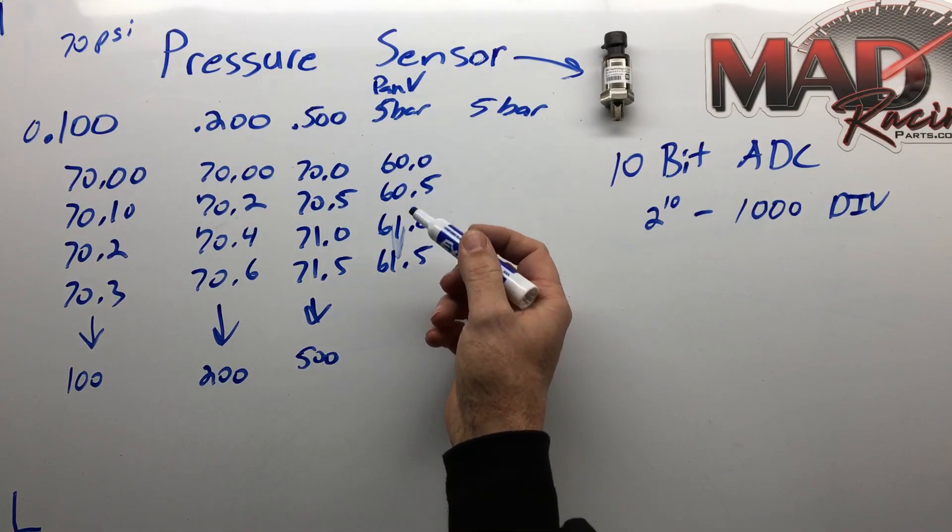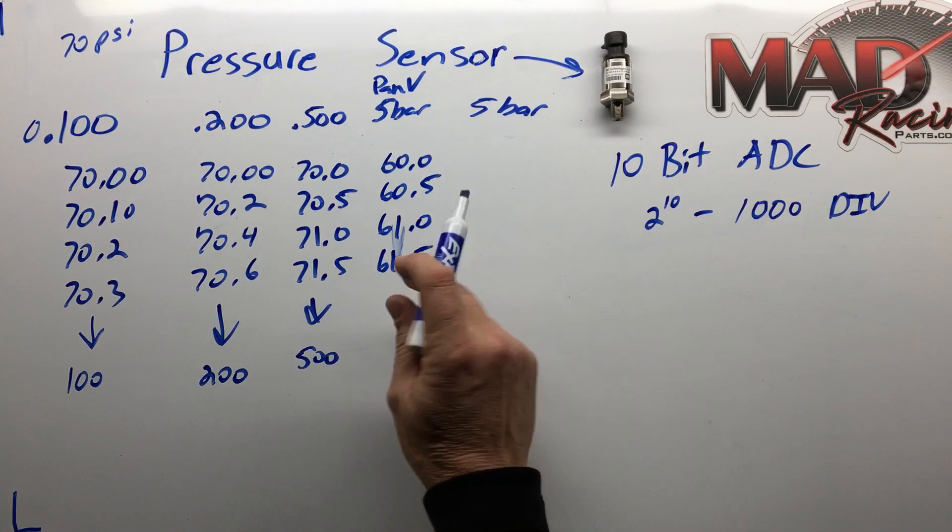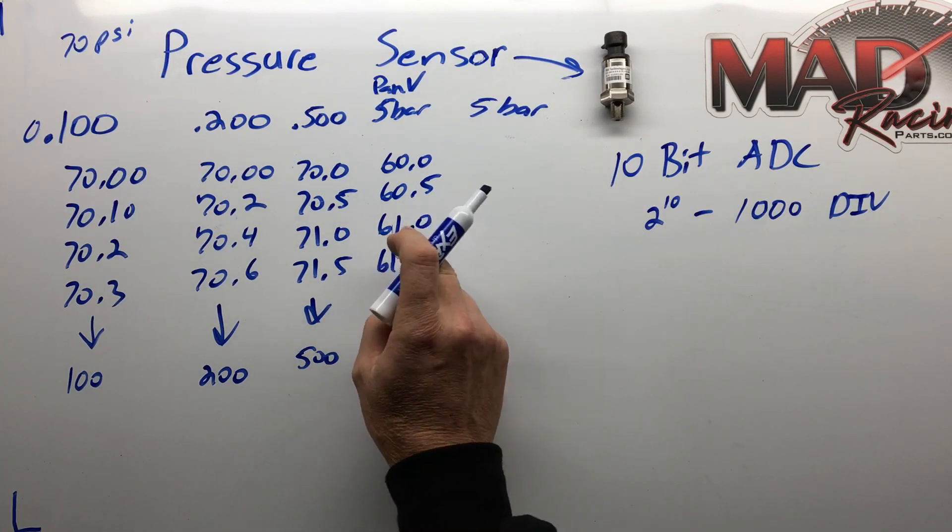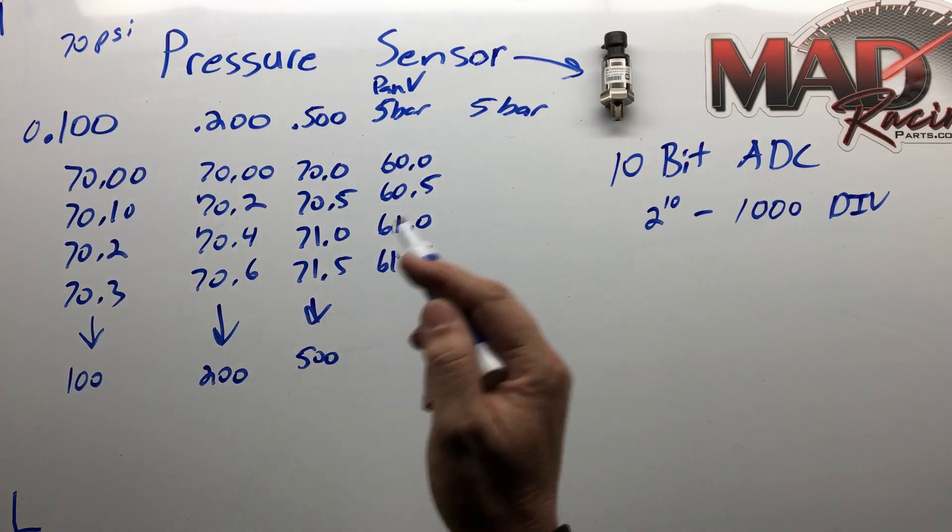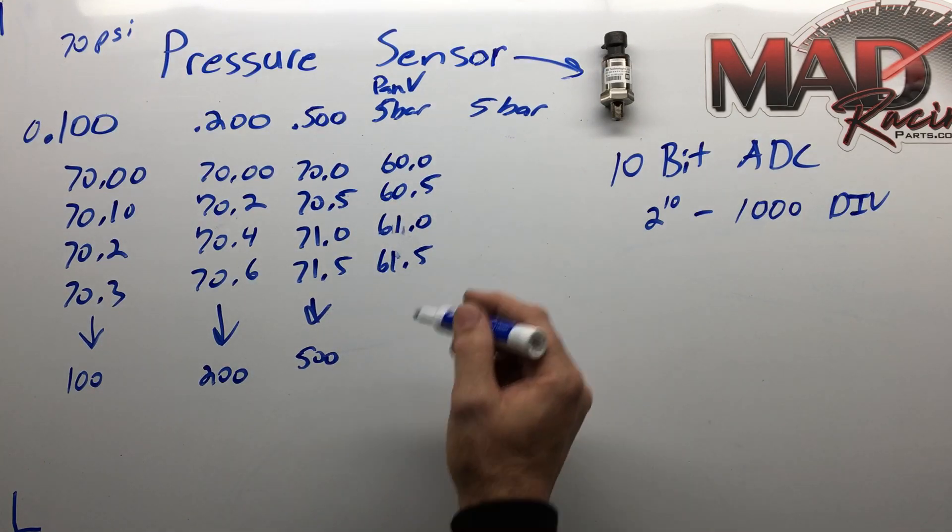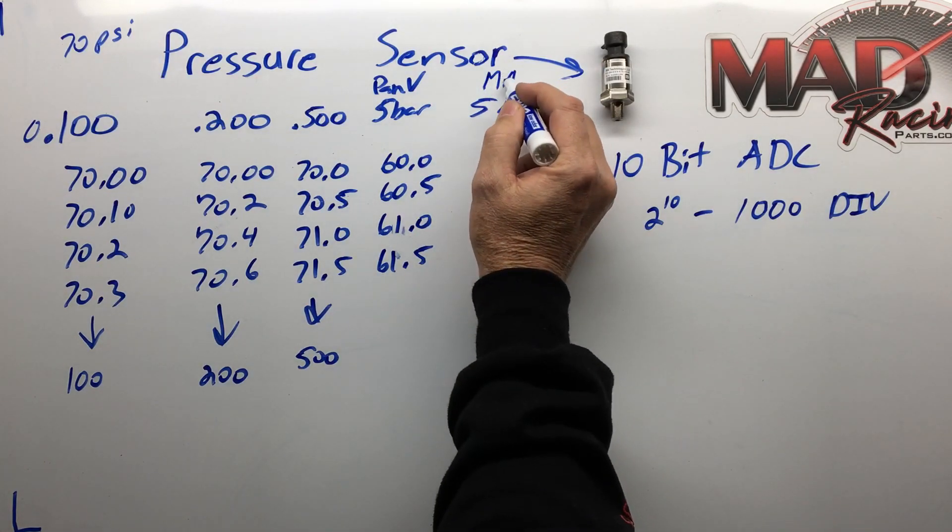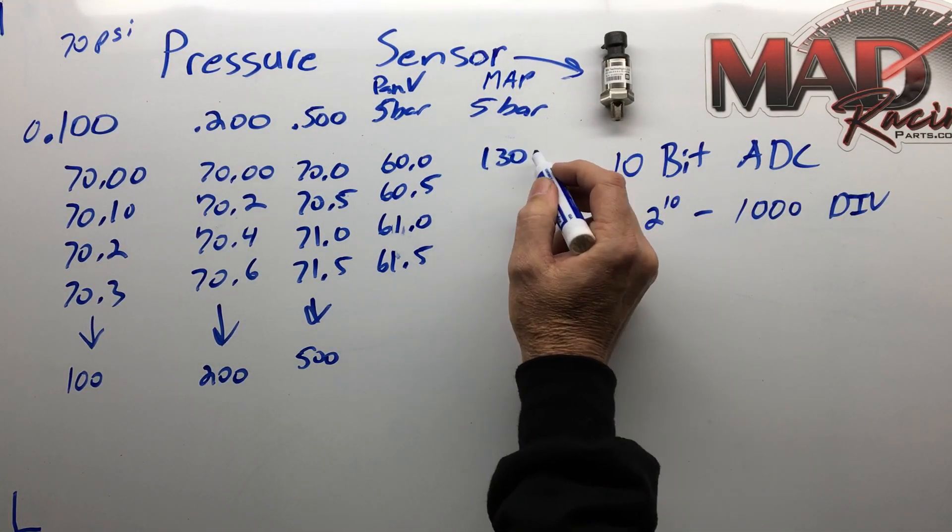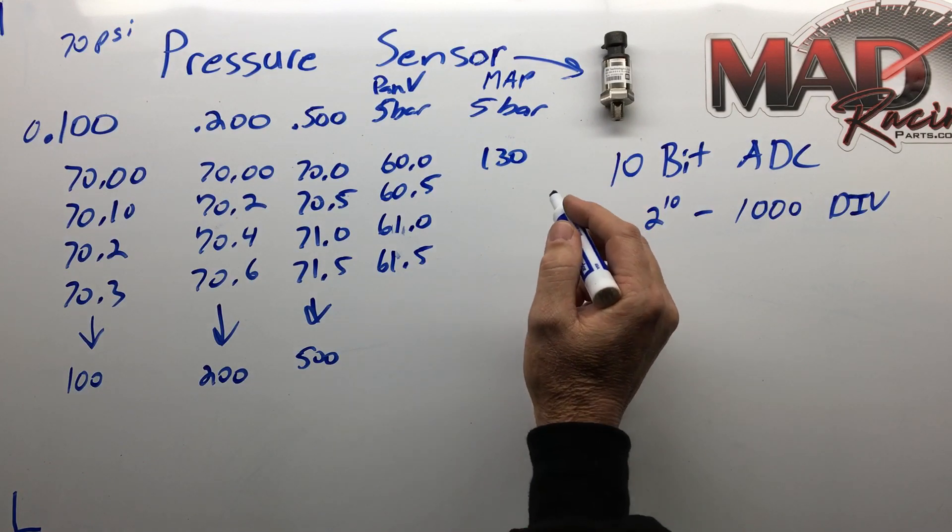And it's going to report the same thing every time if the conditions are the same. So repeatability is what matters more than an actual number. It's the fact that I repeat every time, and then on your MAP you're going to have the same thing. You get into boost, you have 130 kPa, a little bit more pressure, 130.5 and 131.